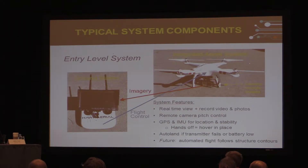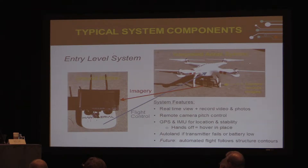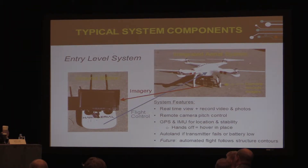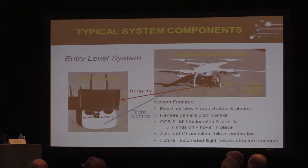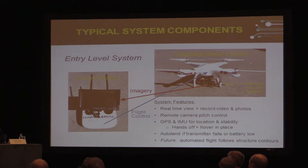In the future, we see some companies that are working on having an automated drone system for inspection of cell towers. It actually kind of follows the contours of the tower, takes pictures, and can stitch it into a 3D model. So a lot of interesting stuff on the horizon.